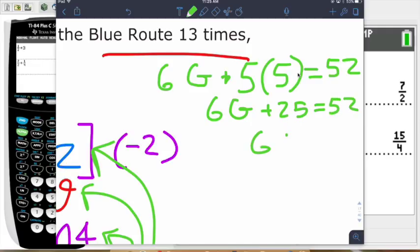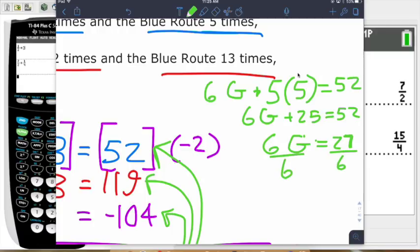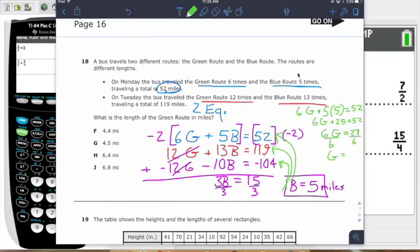So 6G plus 25 equals 52. I'm going to subtract 25 from both sides there. That'll be 27. And then we will divide by 6 there. Let me grab a calculator. 27 divided by 6 is 4.5. So that is your green route, 4.5 miles. And that is how you do that one.